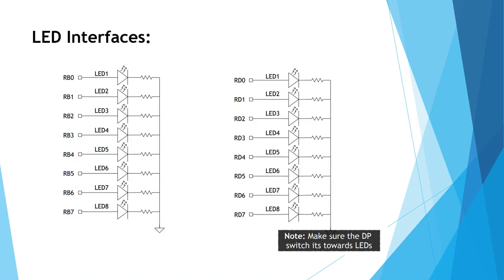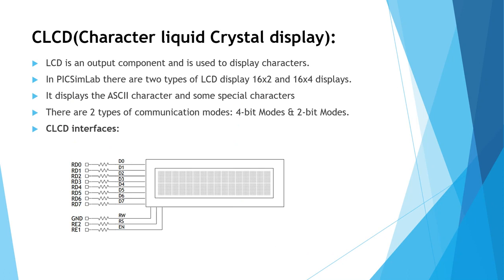Next comes the CLCD — Character Liquid Crystal Display. It is an output component used to display characters. In PIC-SimLab there are two types of LCD displays: 16x2 and 16x4. It displays ASCII characters and some special characters. There are two types of communication mode: 4-bit and 8-bit. The LCD interface connects RD0 to RD7 to D0 to D7, with RE2 and RE1 connected to Enable, RS, and RW respectively.